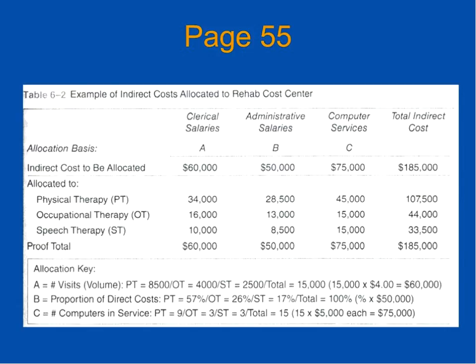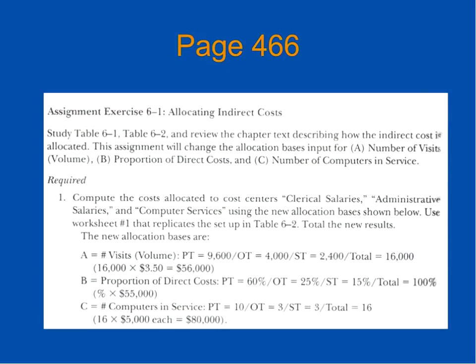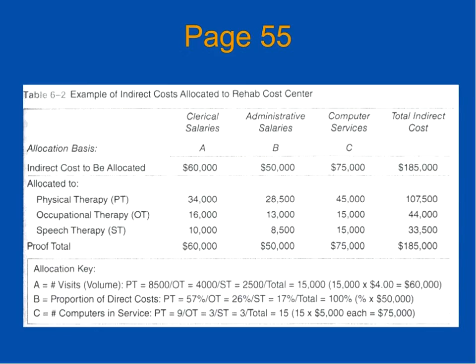Going back to page 466, you'll see this row here — Visits — and you'll see these numbers, PT 9600 as an example. What we're looking to do is to replace this row of information with the information that we see on page 466. For instance, Visits Volume PT equals 8500.